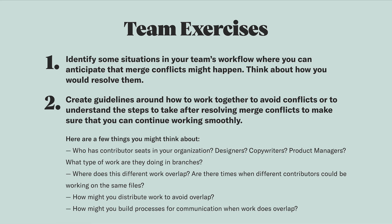For example, if you have copywriters with contributor seats in Abstract and they make child branches off of your branches to work on copy, while other designers work on the layout and visual changes in a parent branch, you could reasonably expect that you might end up with some merge conflicts. Knowing this ahead of time, you can create those guidelines around how to work together to avoid them or to make sure that you can resolve them afterward. I've also included a few other questions at the bottom for things that you can think about while you're going through this exercise.